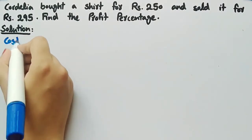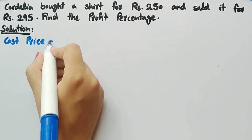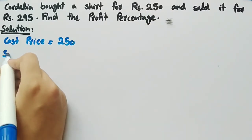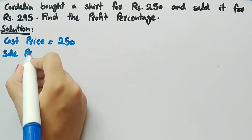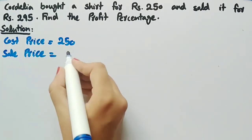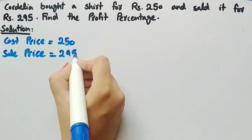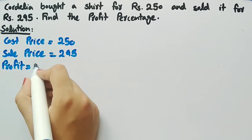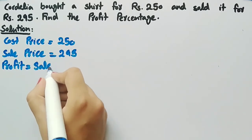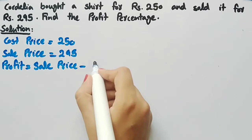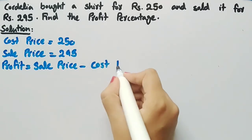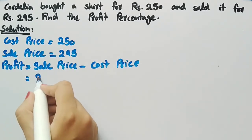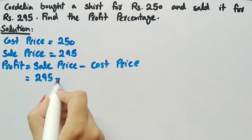It is given that cost price is equal to 250 rupees and sale price is equal to 295 rupees. We know that profit is equal to sale price minus cost price. Putting the values we get, sale price is 295 rupees minus cost price is 250 rupees.